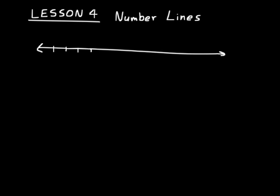Then you put what are called tick marks on the line. On the left side, you just start with some number — it doesn't really matter what number you start with. The number line just has to have enough numbers to work for the type of problem you're trying to do. So for this one, let's just start with negative 5 and then count: negative 4, negative 3, negative 2, negative 1, 0, 1, 2, 3, 4, 5, 6, 7.